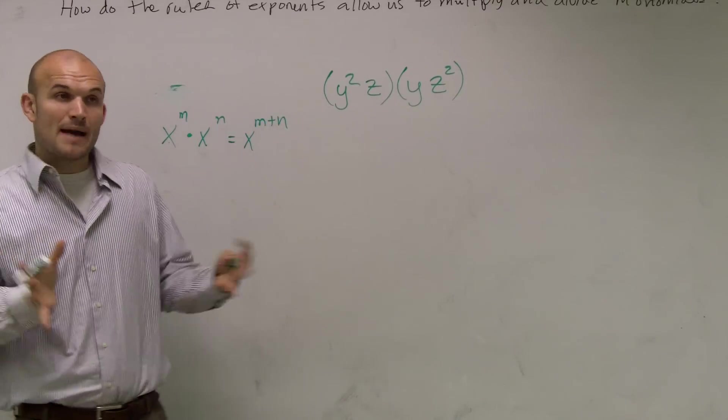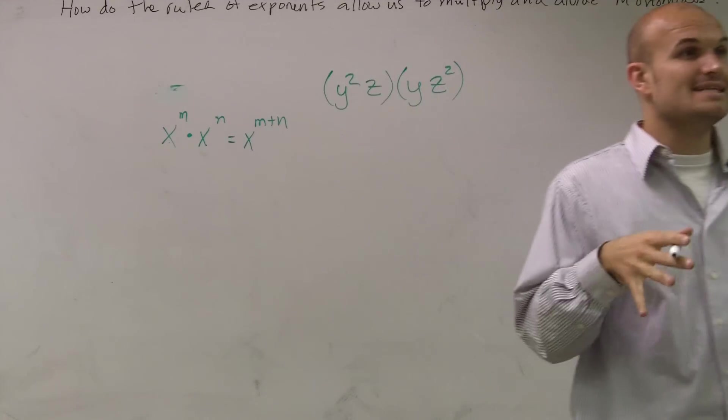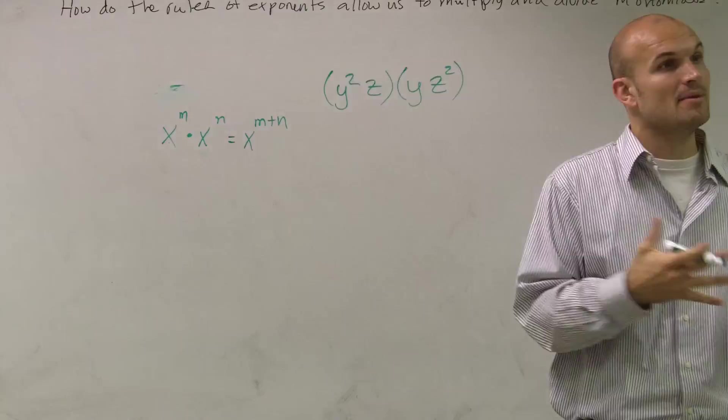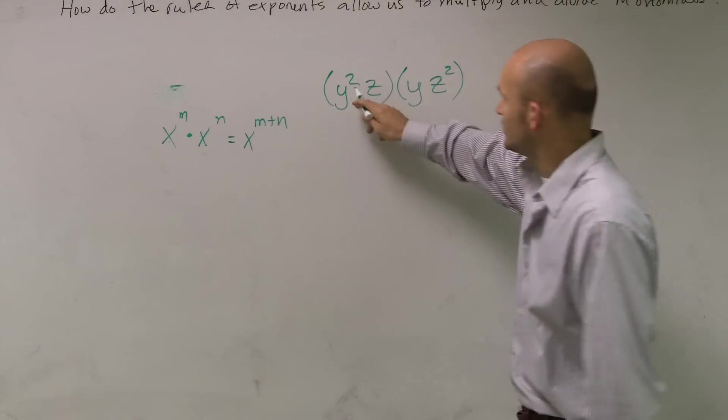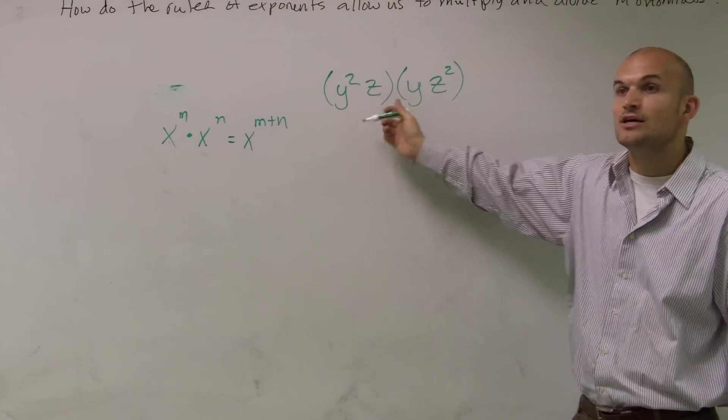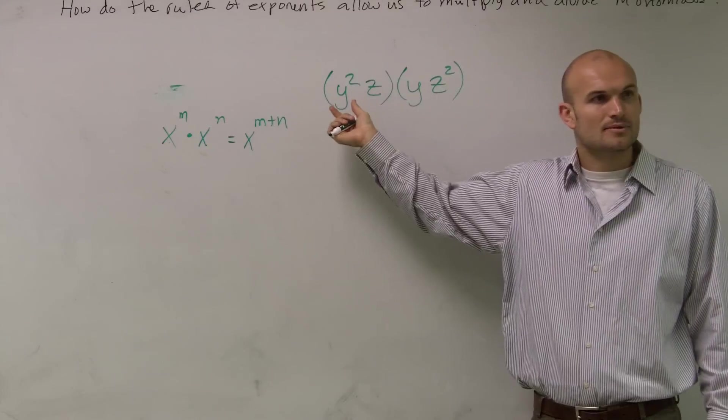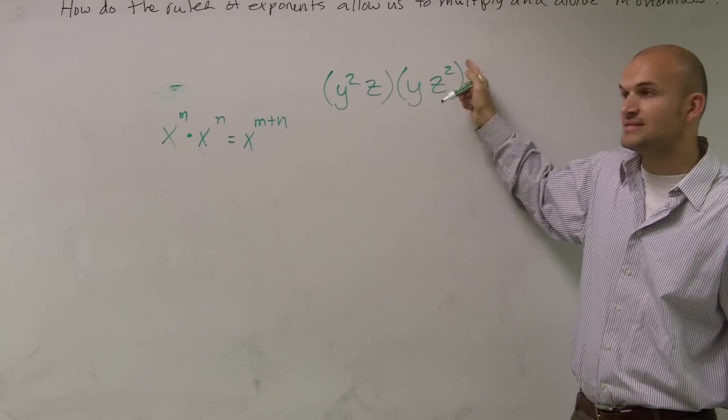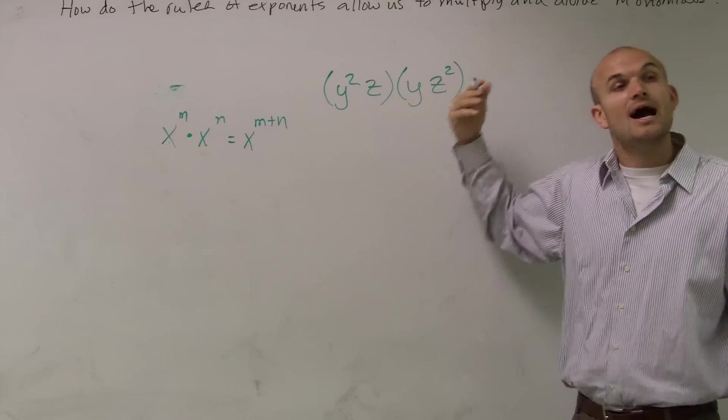So what I'm going to do is, when I'm multiplying numbers and they have exponents, I need to make sure that the ones that have the same bases, I can combine them by adding their exponents. So here I'm multiplying y squared times z. Do those have the same bases? No. So I can't simplify that any further. Then that's multiplied by y times z squared. I can't multiply that any further. However,